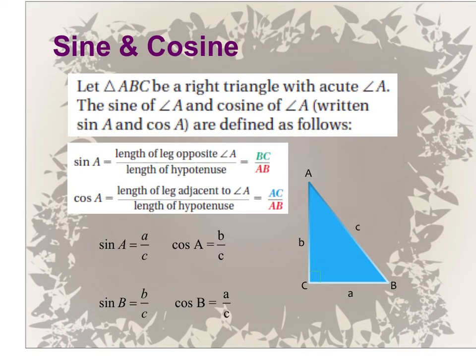Always remember, we're only doing this trig with right triangles. So we're going to let ABC be a right triangle, and it's going to have an acute angle at angle A and at angle B. Whenever we're asked to find sine, cosine, or tangent, it will never be on that right angle — it will always only be on the acute angles.